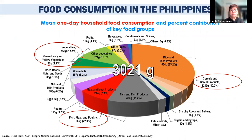Looking at one-day household food consumption and the contribution of key food groups, cereals—especially rice—occupy the bulk of the diet. Fish, meat, and poultry comprise about 22 percent, and vegetables about 15 percent, with green leafy vegetables at about 5 percent. Fruit consumption is very low at only about 4 percent, which is far from WHO recommendations.